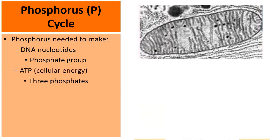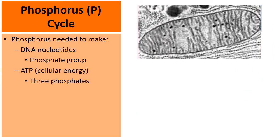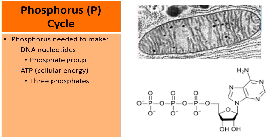Here's an organelle called the mitochondria, and its job is to perform cellular respiration and make this molecule called ATP — adenosine triphosphate. One, two, three — there are three phosphates, and in the middle is the P for phosphorus. So without phosphorus, the mitochondria can't make ATP energy.